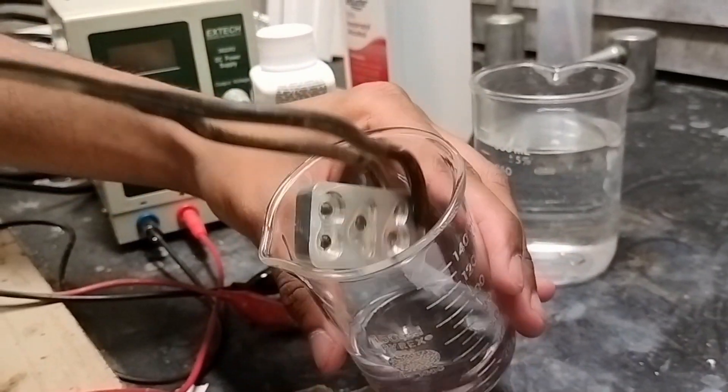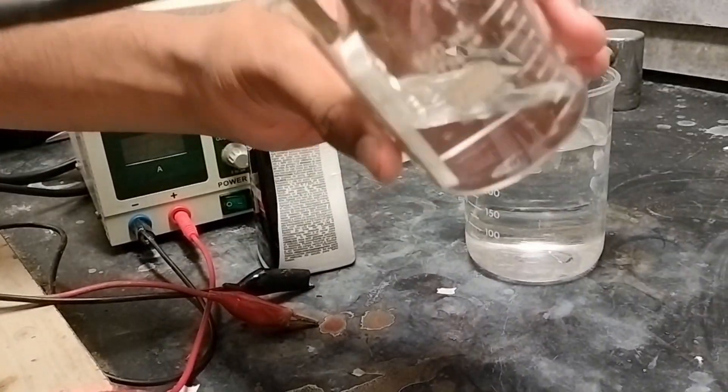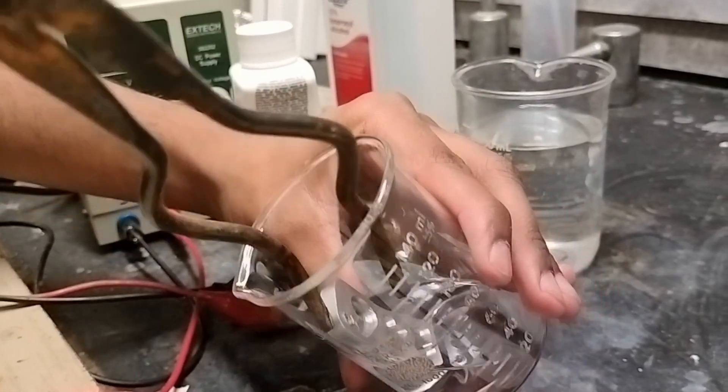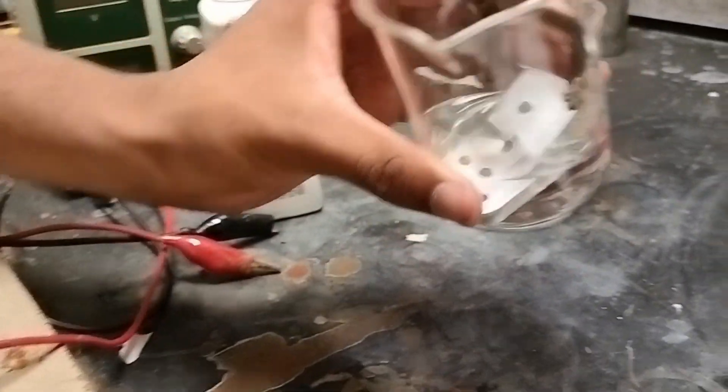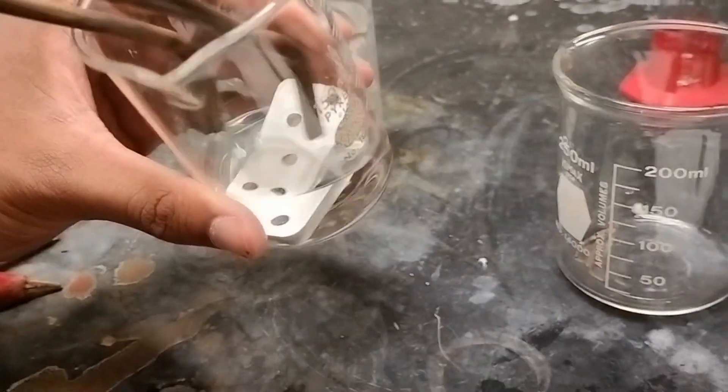My first step in the experiment was to degrease my aluminum part. I did this to remove the dirt off my part. First, I sanded my part down using 300 grit sandpaper. Then, I cleaned the part using isopropyl alcohol.